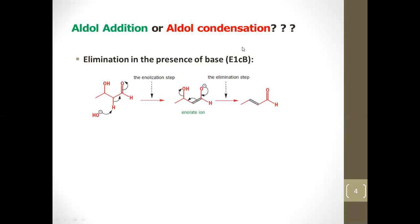This mechanism is E1cb — elimination unimolecular conjugate base. This reaction most often happens in the presence of a base. During the reaction a conjugate base is formed: when the acid loses a proton, the species formed is the conjugate base. An acid always forms a conjugate base; a base always forms a conjugate acid.